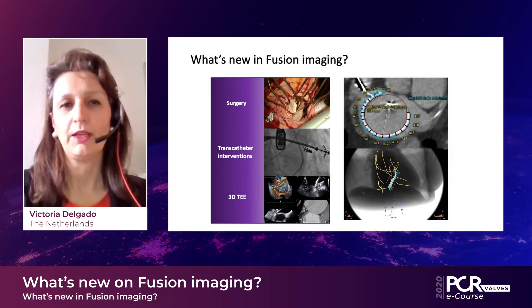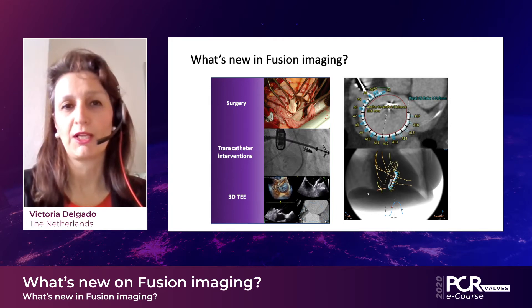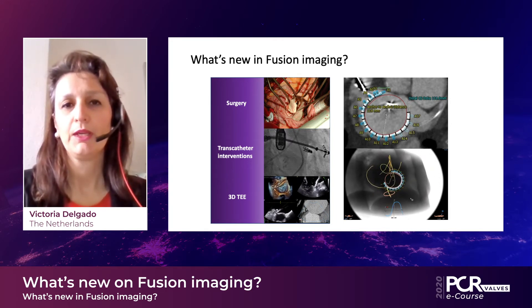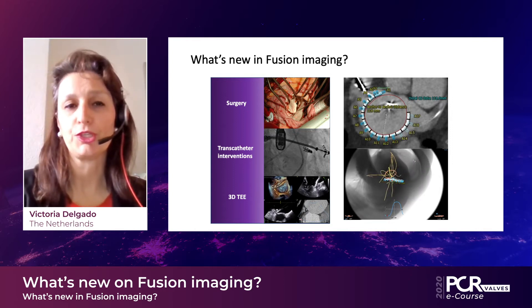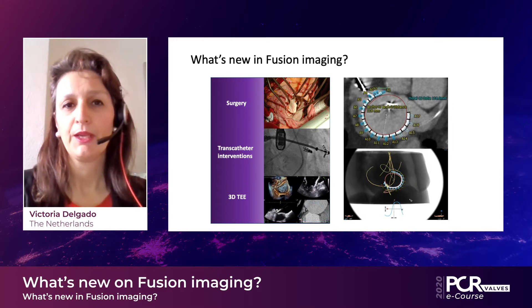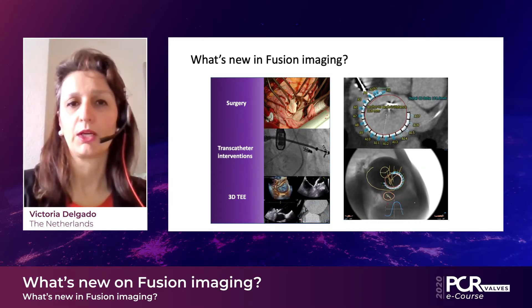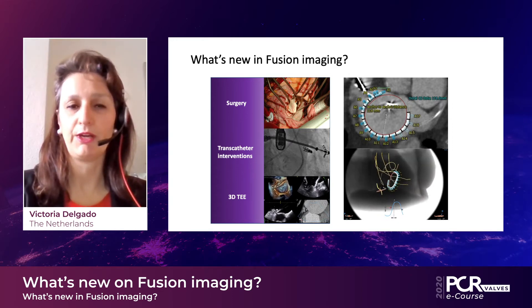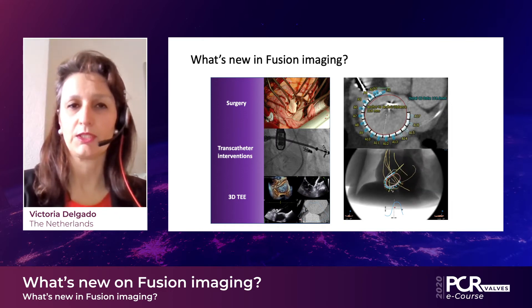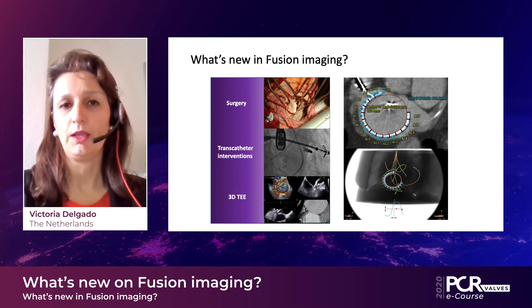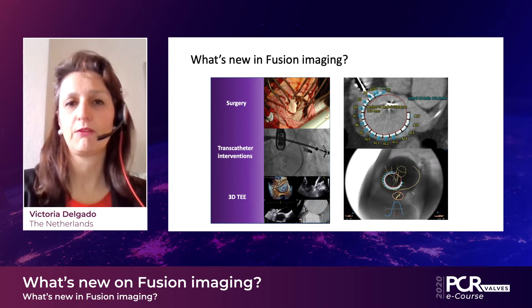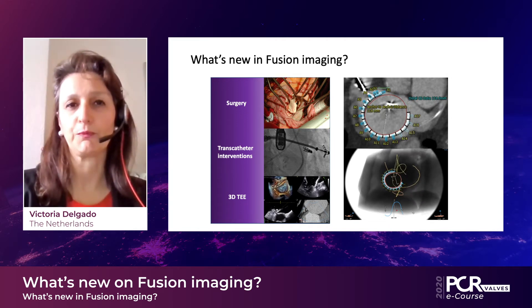Fusion imaging is used right now for guidance of transcatheter interventions. The surgeon is used to seeing directly the structure that is going to be treated or repaired, using mainly echocardiography at baseline to understand the severity of the lesion and the anatomy, and will match that information with what he or she sees during the intervention and will treat the lesion.